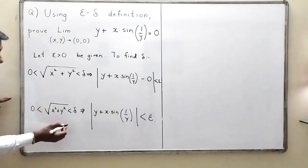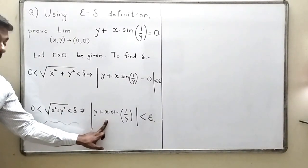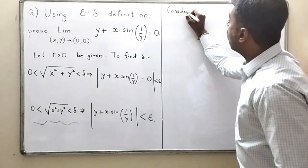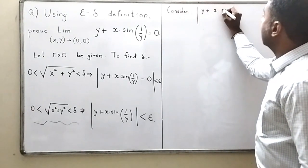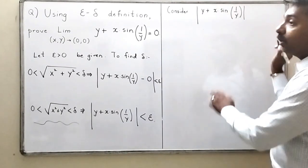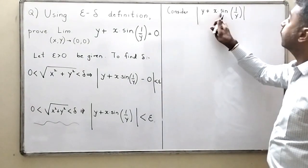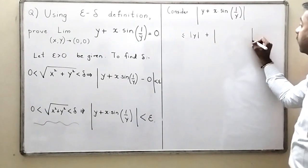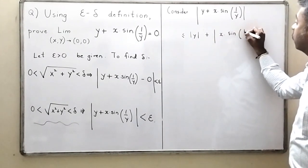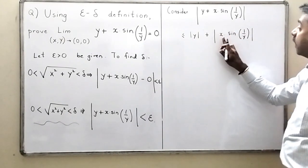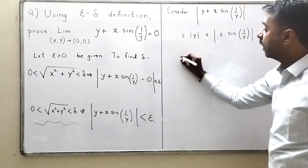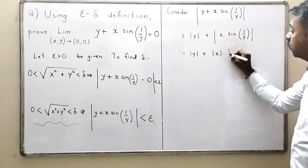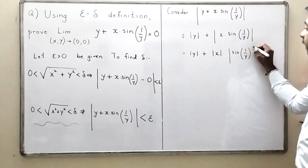I will start with the left-hand side. Consider |y + x·sin(1/y)|. By the triangle inequality (|a+b| ≤ |a|+|b|), this is ≤ |y| + |x·sin(1/y)| = |y| + |x|·|sin(1/y)|. So I have reached |y| + |x|·|sin(1/y)| and now I need to simplify further.